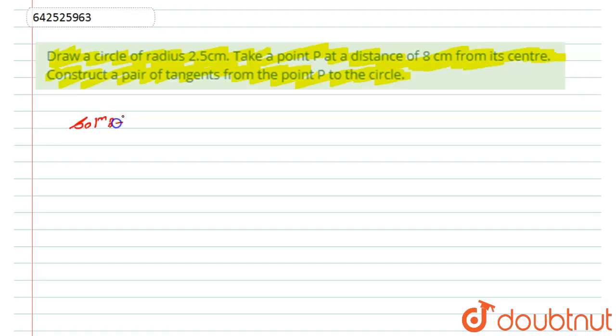So first of all, what I will do, I will draw a circle whose radius should be 2.5 cm. Now take the measurement of 2.5 cm into the compass and draw a circle whose radius should be 2.5 cm.